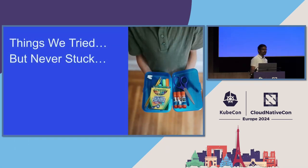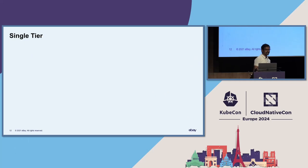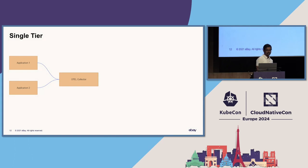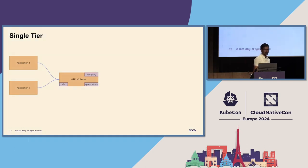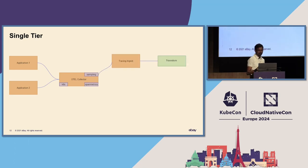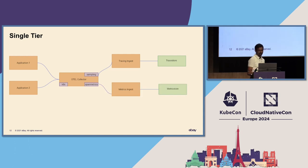What are the things that we tried but never stuck? First, we tried a single tier approach where all our applications write to the OpenTelemetry Collector. We first put it through Kubernetes enrichment, then generate span metrics, do the tail sampling processor, and from there write the traces into the trace platform and the span metrics into the metrics platform.